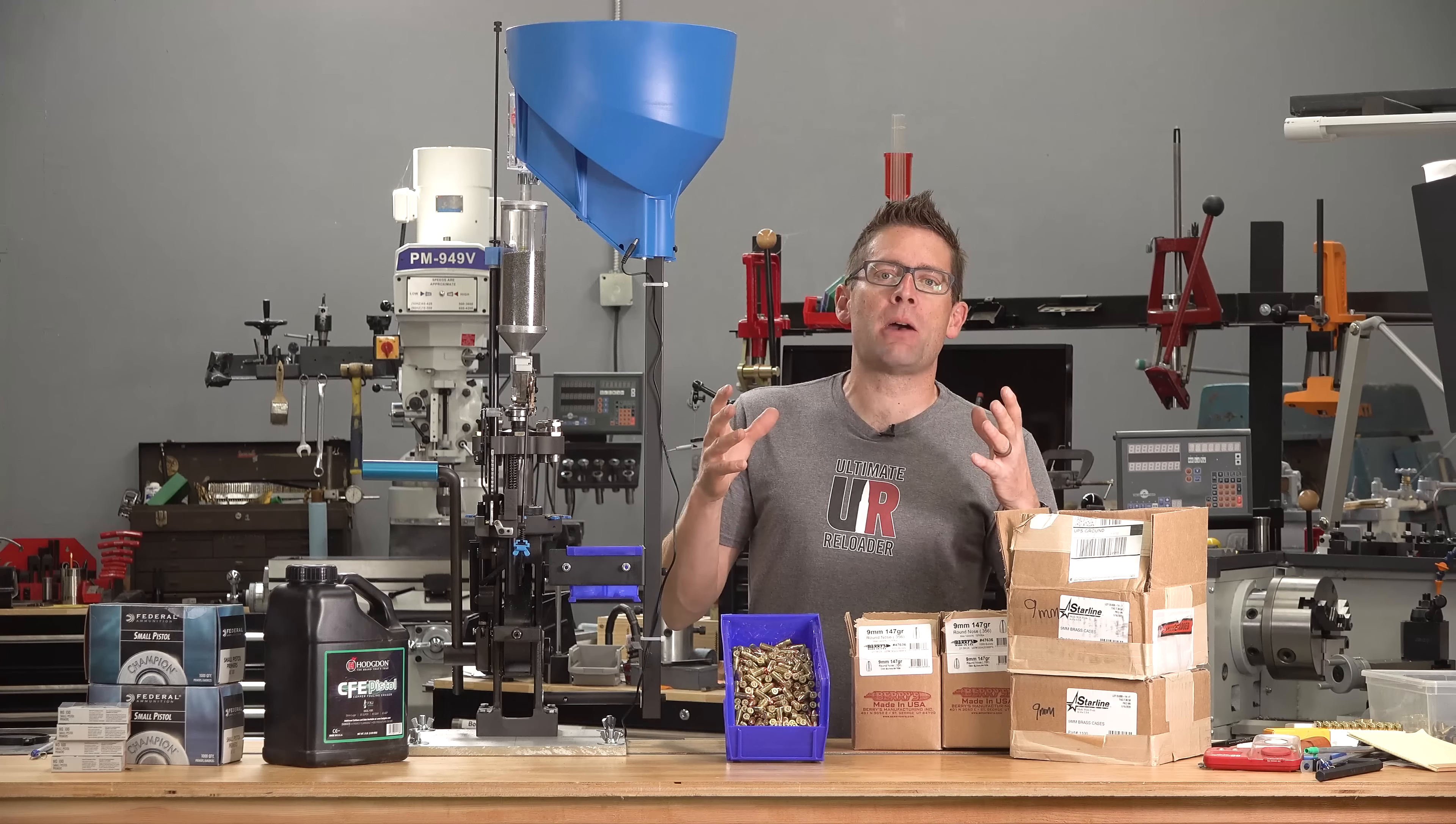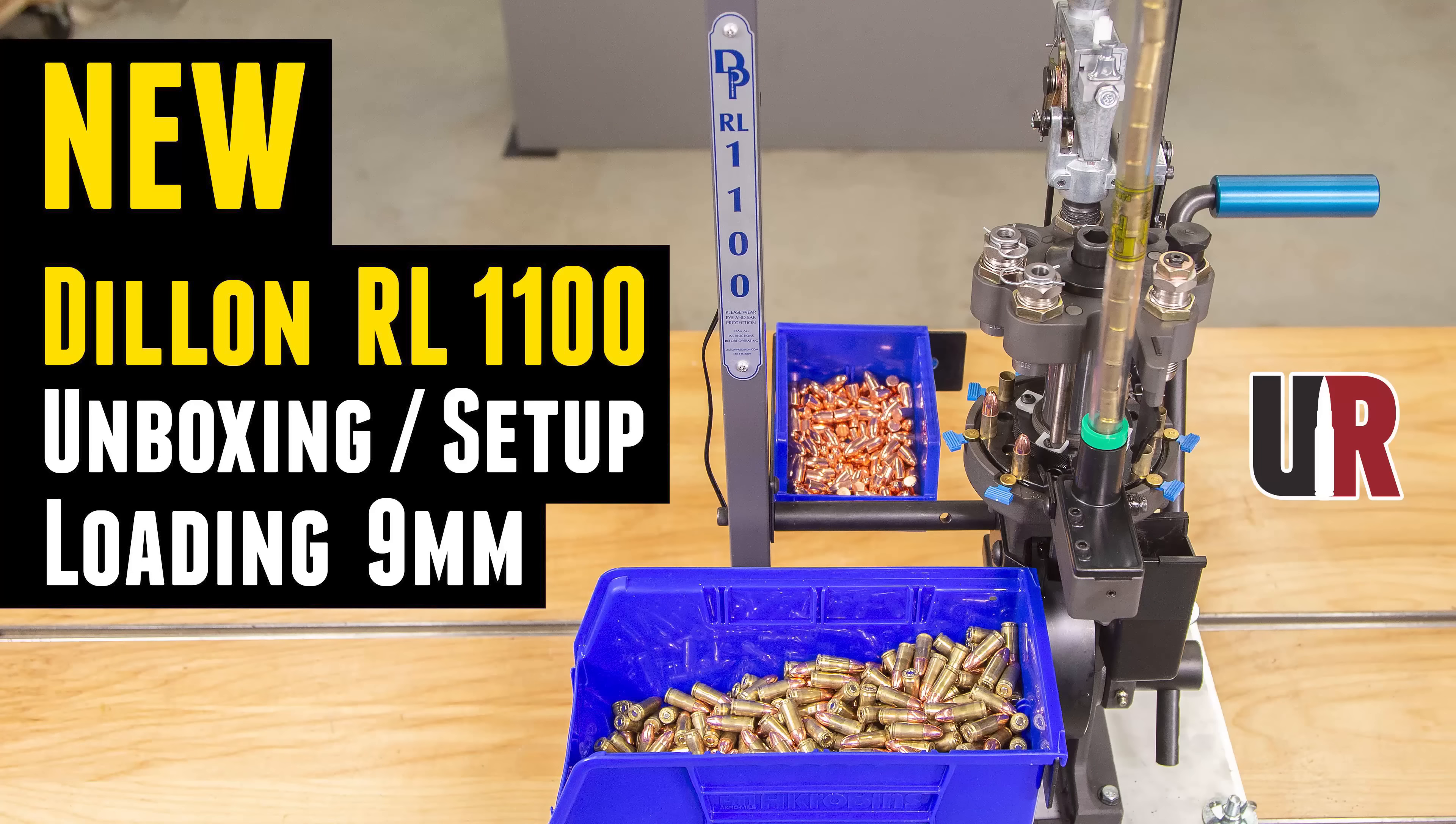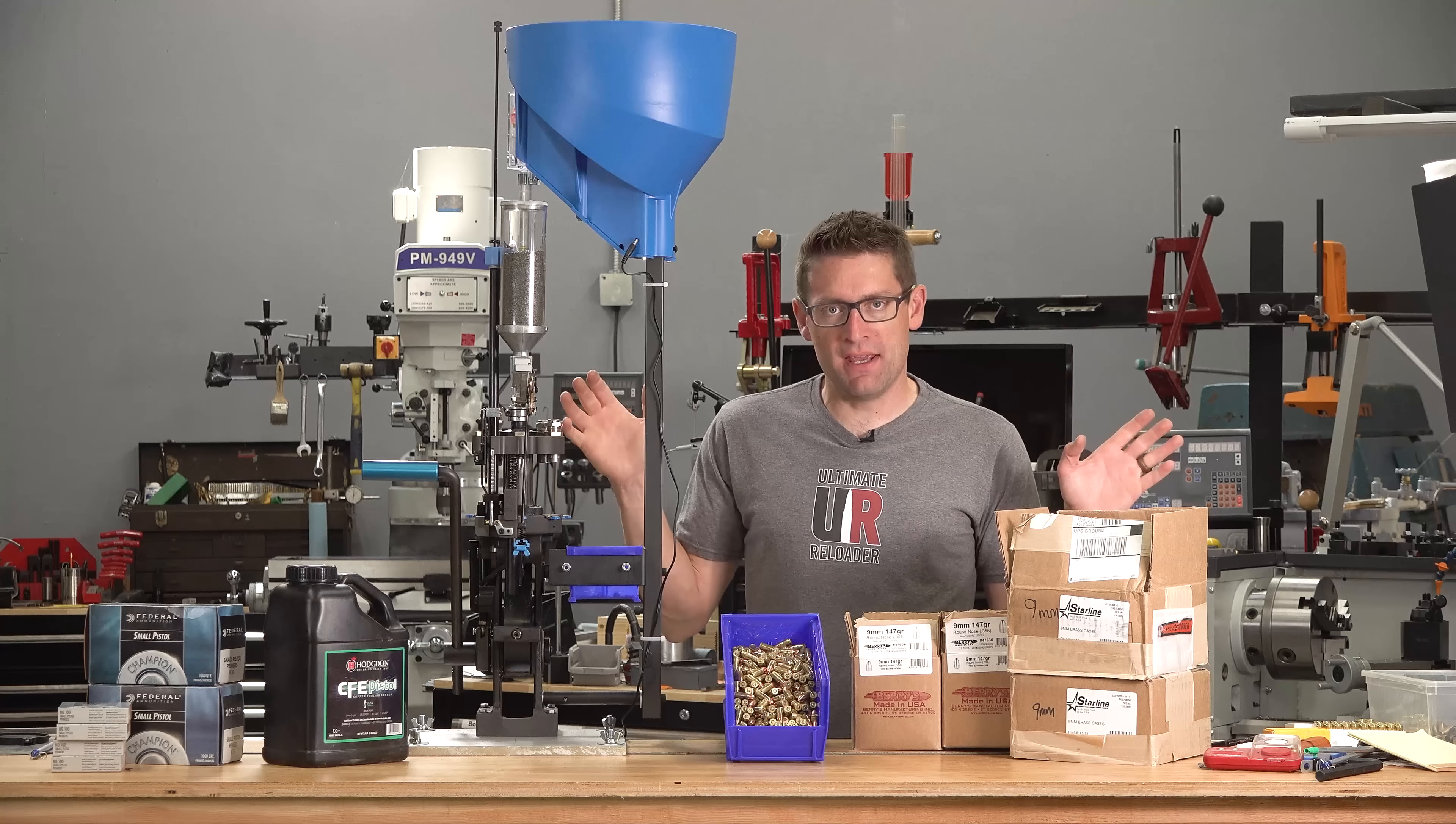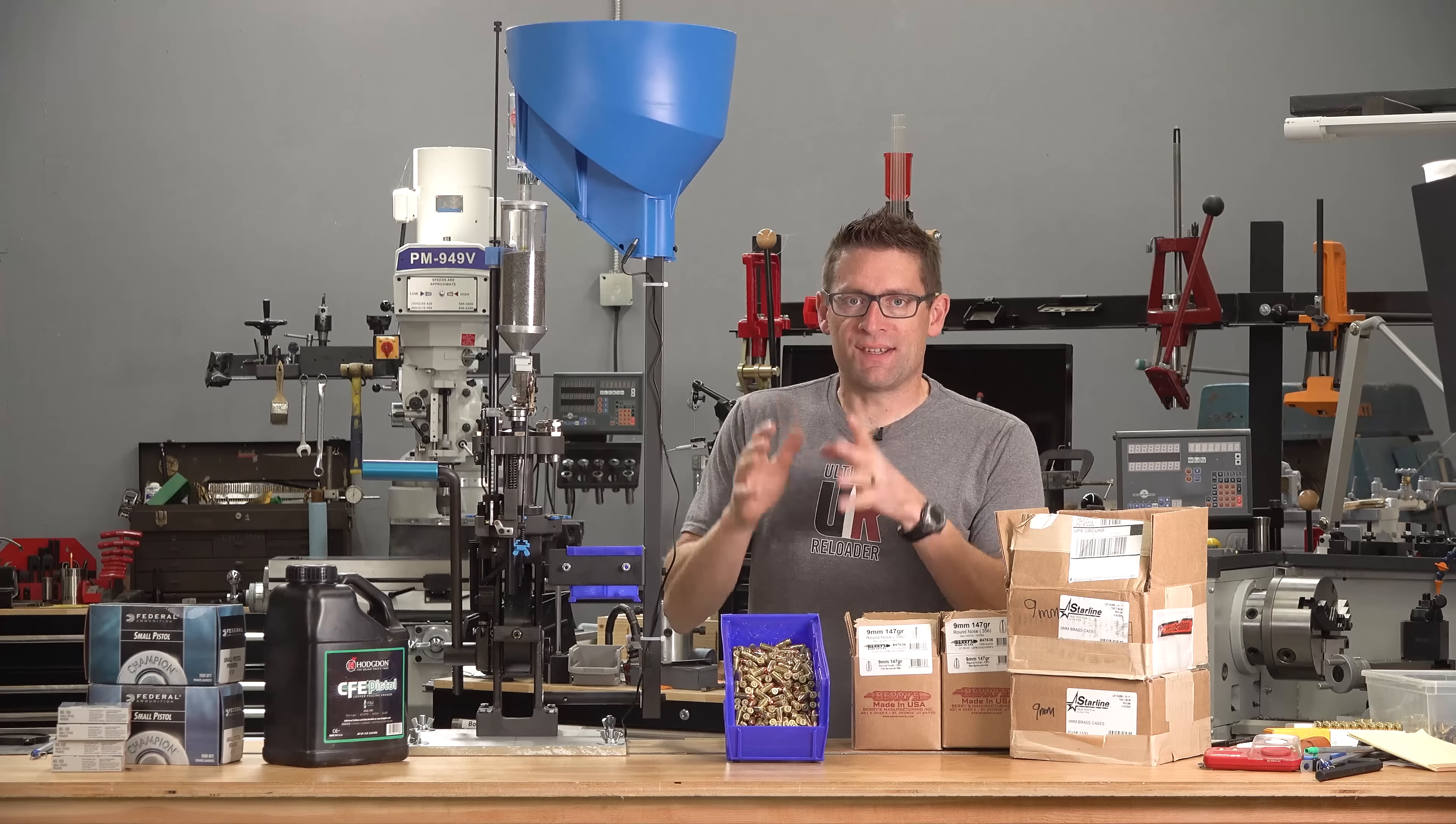In this video I'm going to pick up where I left off in my Dillon RL 1100 9mm unboxing, overview, setup, and loading ammo video. In that video I got the press completely dialed in, but we still don't have a powder check and a bullet feed setup.